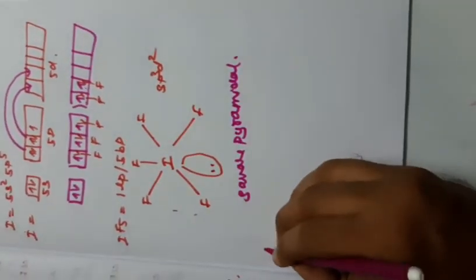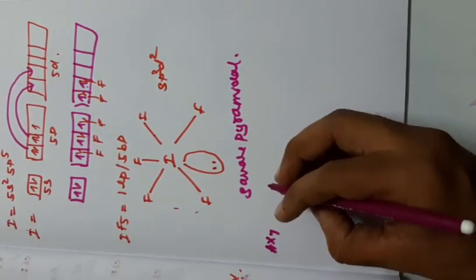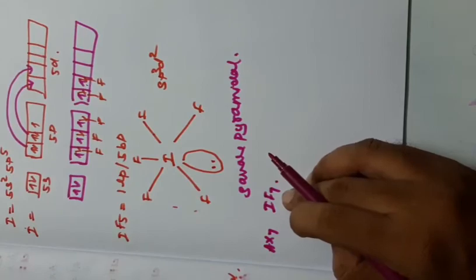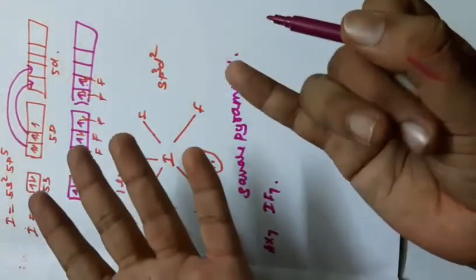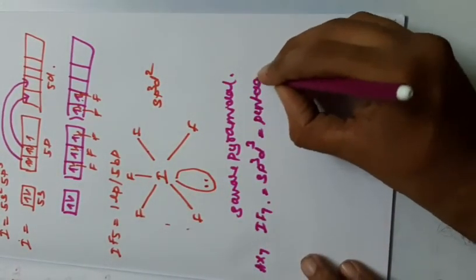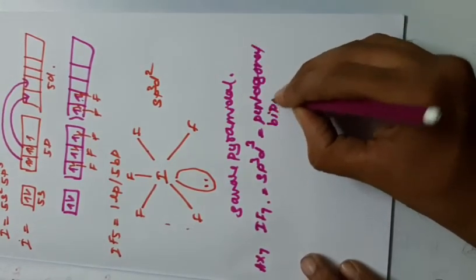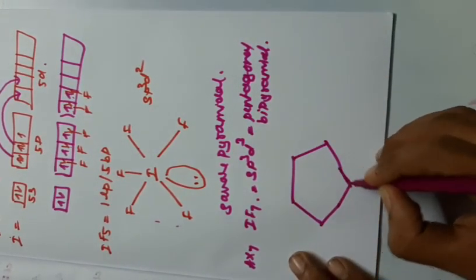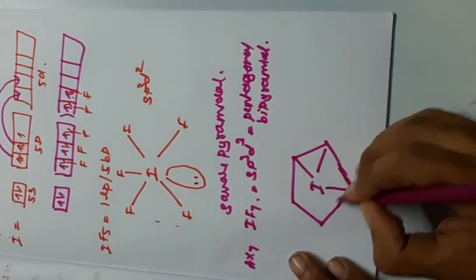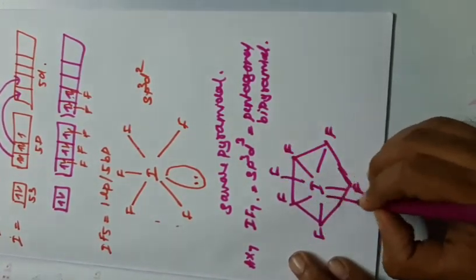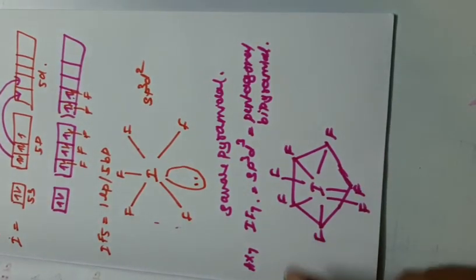For AX7 type, example is IF7. All 7 valency electrons of iodine are involved in bonding — no lone pairs. The hybridization is SP3D3. The geometry is pentagonal bipyramidal: a pentagon ring of 5 fluorine atoms in the equatorial plane, with 1 fluorine on top and 1 fluorine at the bottom. This is the geometry of the AX7 type interhalogen compound.